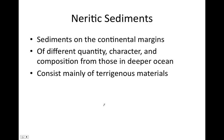We can also group sediments based upon where they are deposited. Neritic sediments are those deposited on continental margins, and they differ in quantity, character, and composition from sediments deposited on the deep ocean floor. As you might guess, neritic sediments are mostly terrigenous sediments, which makes sense because we'd expect a lot of land-derived sediment to be deposited on the continental margins.